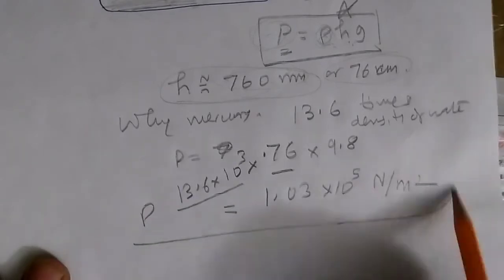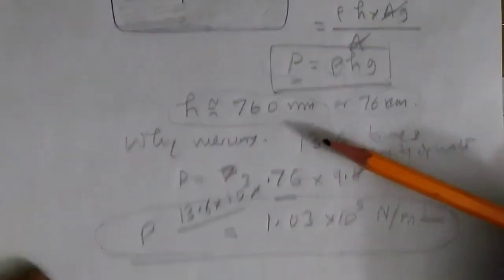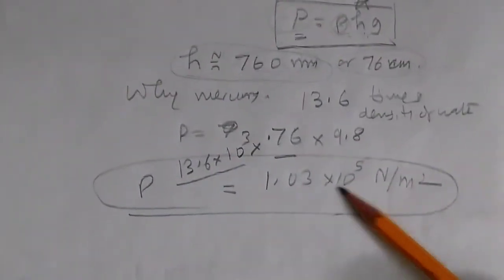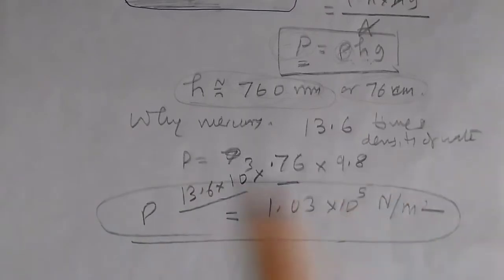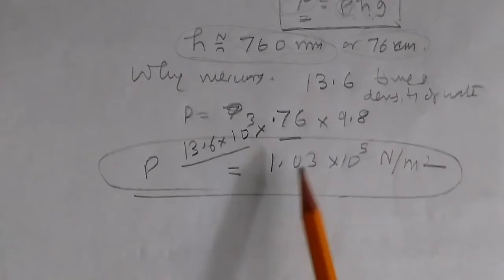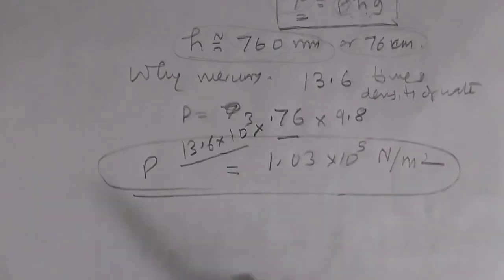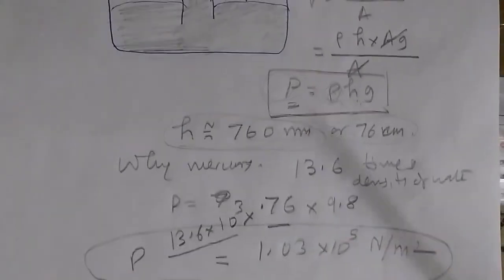And that is our atmospheric pressure. So we say 760 mm of mercury column pressure, or we say 1.03 into 10 to the power of 5 Newton per meter square. These two are pretty much interchangeable things. You can also change this pressure into other units, for example CGS unit by converting it to centimeter and other things.